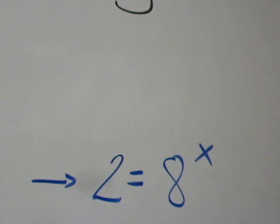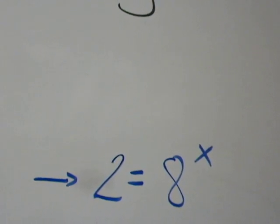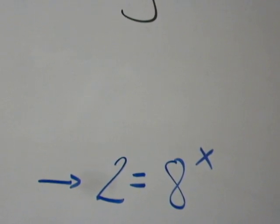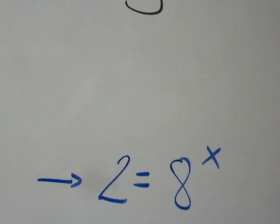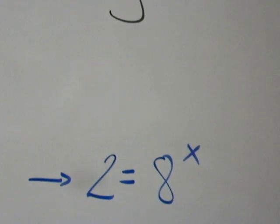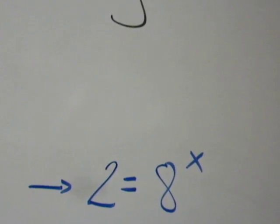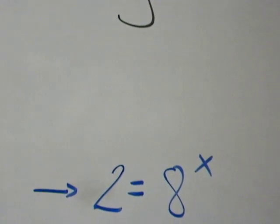So this means that 2 is equal to 8 to some power. What the heck? 8 to the first power is 8. 8 squared is 64. 8 to the third, I don't know, I can't do that in my head. Well, the x obviously can't be an integer. It can't be a number greater than 1. So it has to be something smaller than 1.